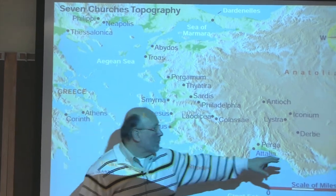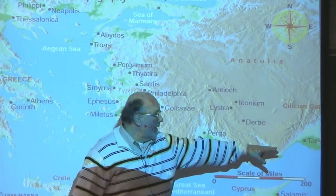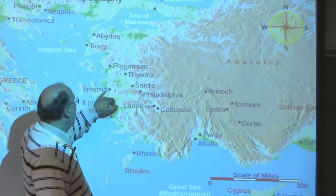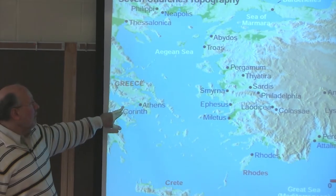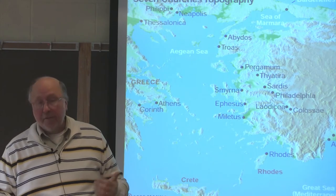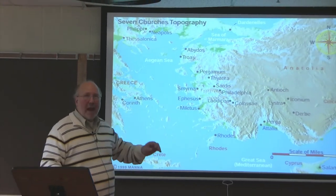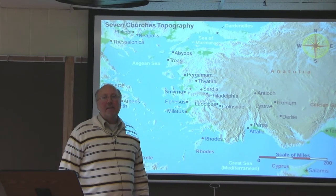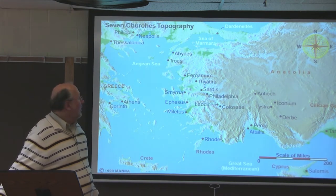Paul came from Tarsus, which is right there, kind of where Turkey meets Syria. And Paul's going to travel on his missionary journeys here. Here's Ephesus — Paul's going to be there for a while — and Corinth, which we just talked about, is here. In the next few hours, we'll be going over the first, second, and third missionary journey of the Apostle Paul. This is a satellite image map — I think it's a good one. You can pull it from the PowerPoint.